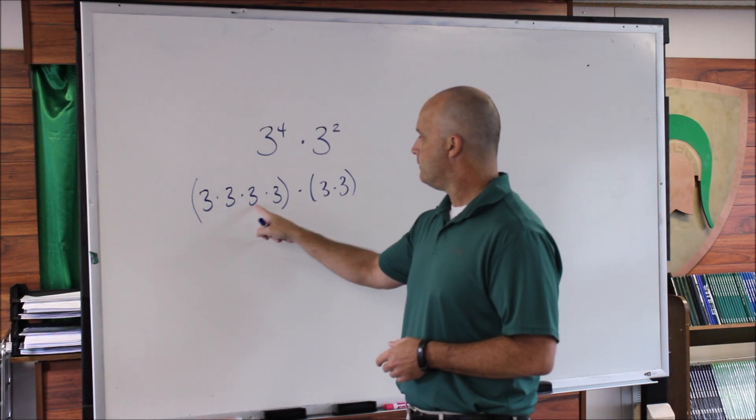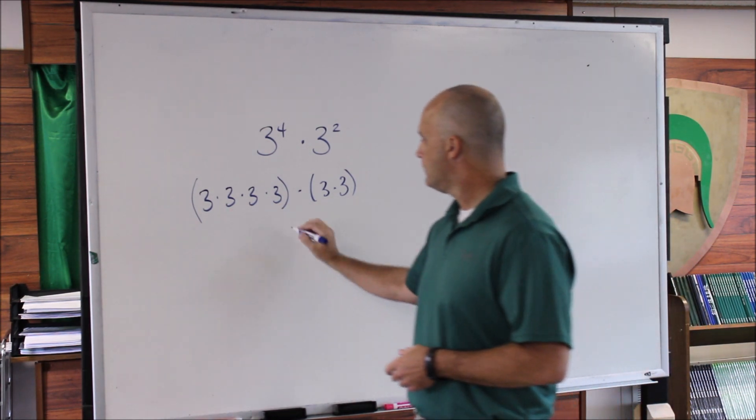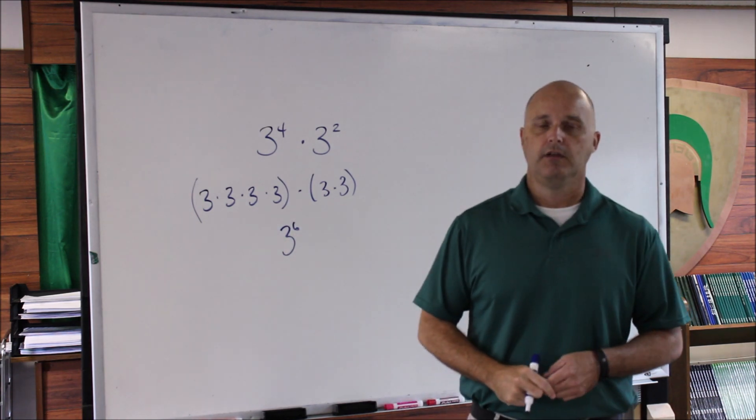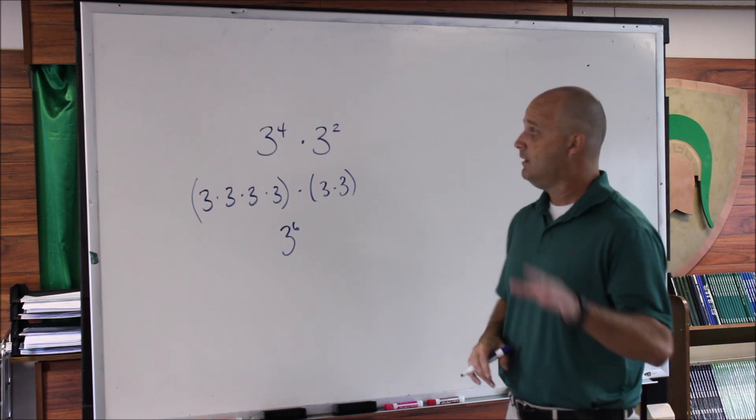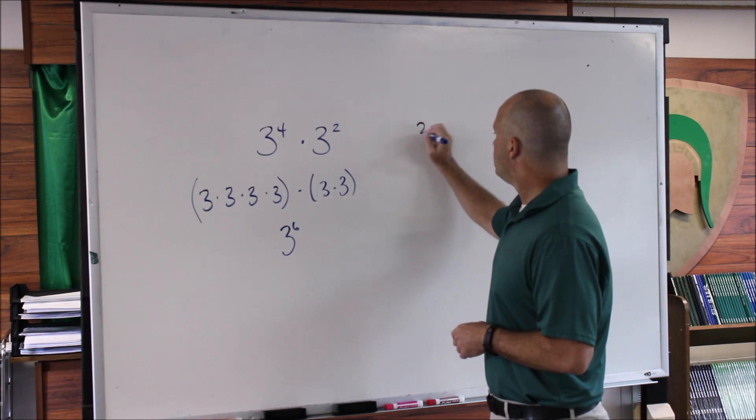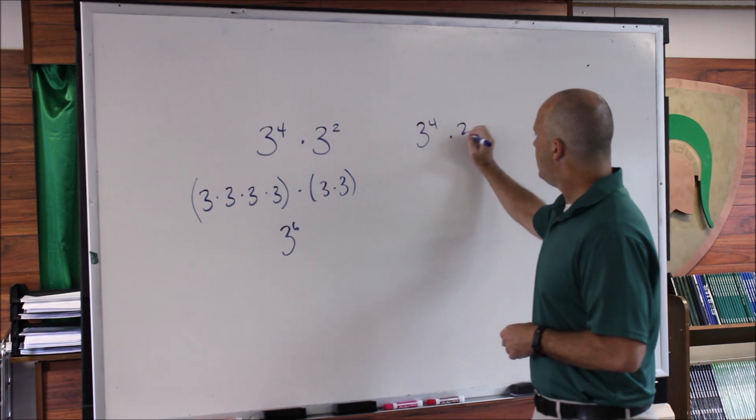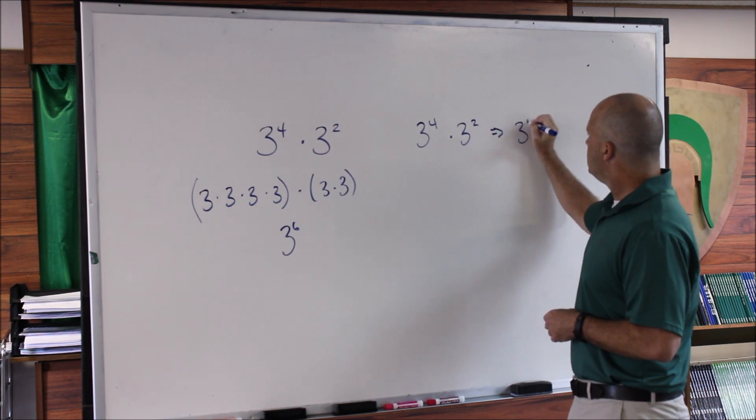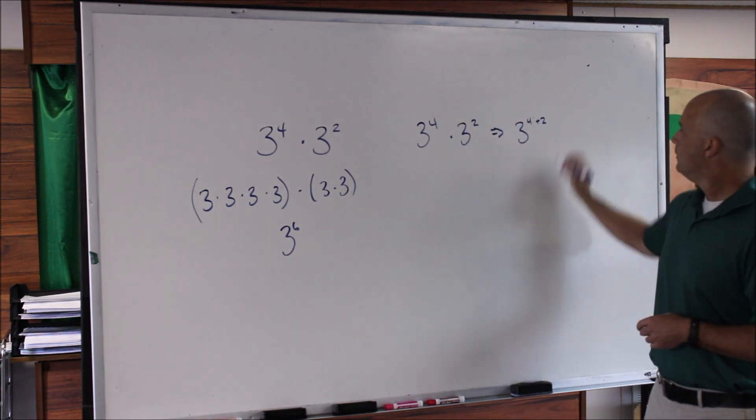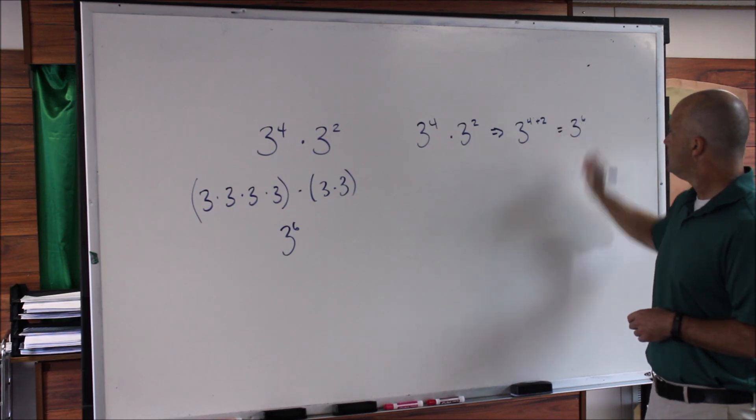1, 2, 3, 4, 5, and 6. So that tells us it's going to be 3^6. So again, that rule is if you're multiplying the same base, just add the exponents. So 3^4 × 3^2 becomes 3^(4+2), which is then 3^6.